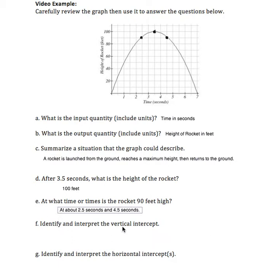Identify and interpret the vertical intercept. That's the location where the graph crosses the vertical axis, which is at (0, 0). This means that the rocket starts at time 0, or 0 seconds, at a height of 0 feet. It's just on the ground before it takes off.